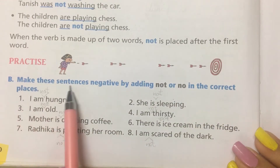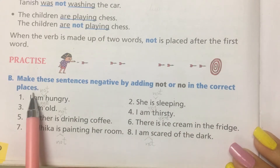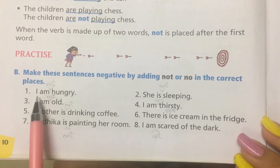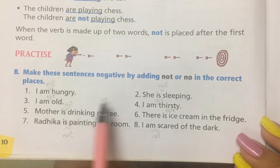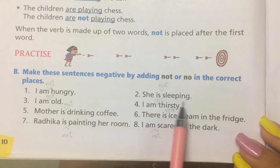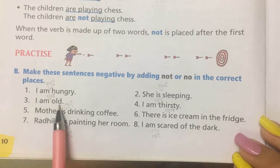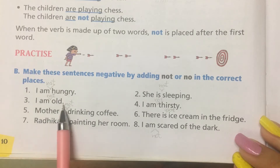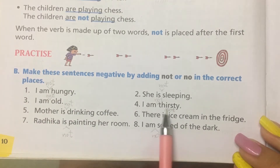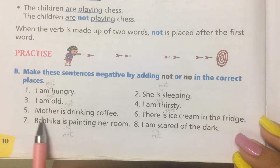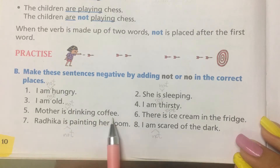Now practice time. Make these sentences negative by adding not or no in the correct places. Number one: I am hungry — I am not hungry. Number two: She is sleeping — She is not sleeping. Number three: I am old — I am not old. Number four: I am thirsty — I am not thirsty. Number five: Mother is drinking coffee — Mother is not drinking coffee.